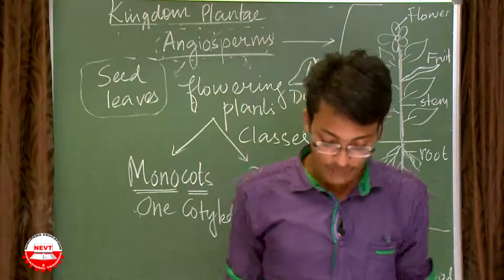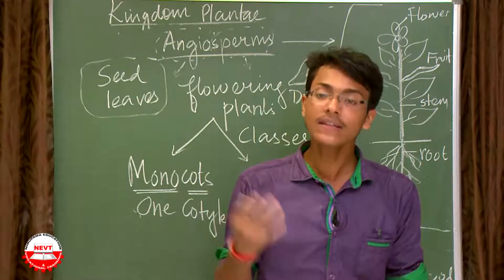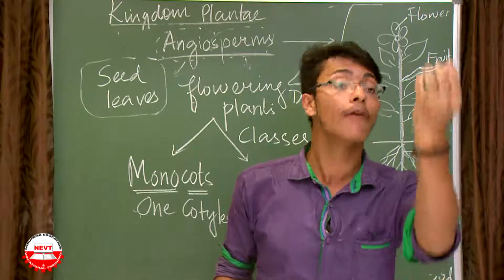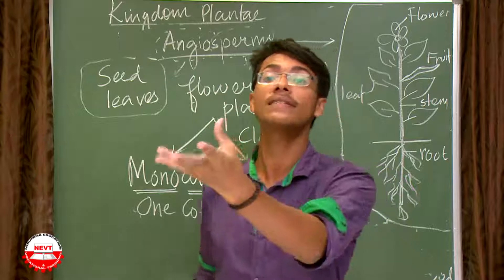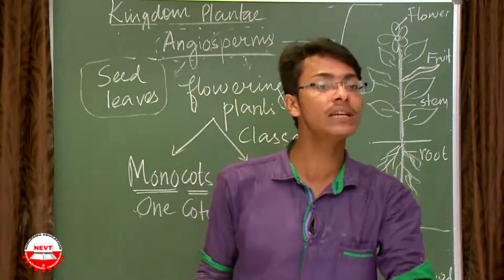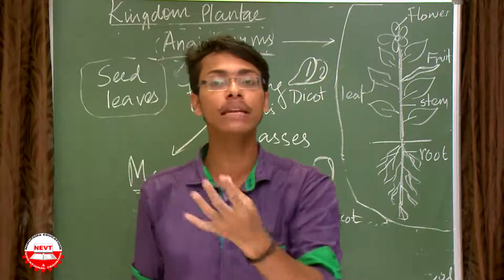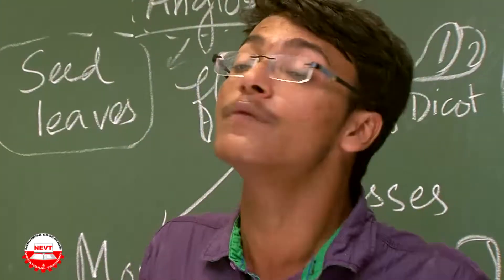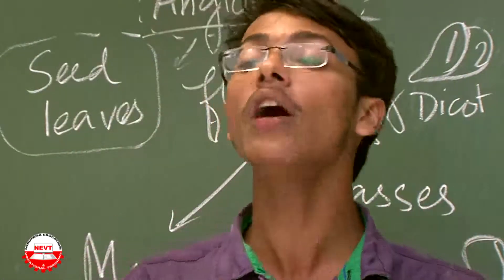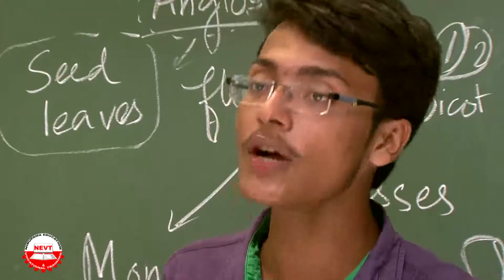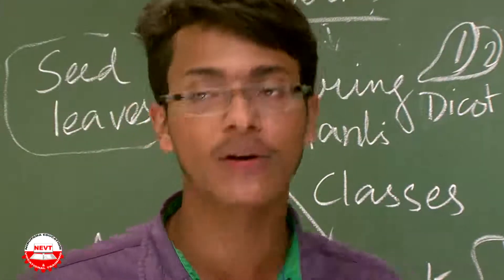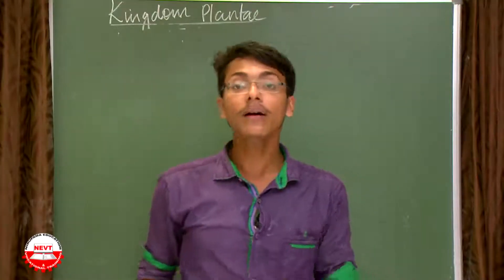Monocots and dicots also differ in vegetative structure: monocots have fibrous roots while dicots have tap roots; monocots have parallel venation in leaves while dicots have reticulate venation. These are the key differences in vegetative structures between monocot and dicot plants.